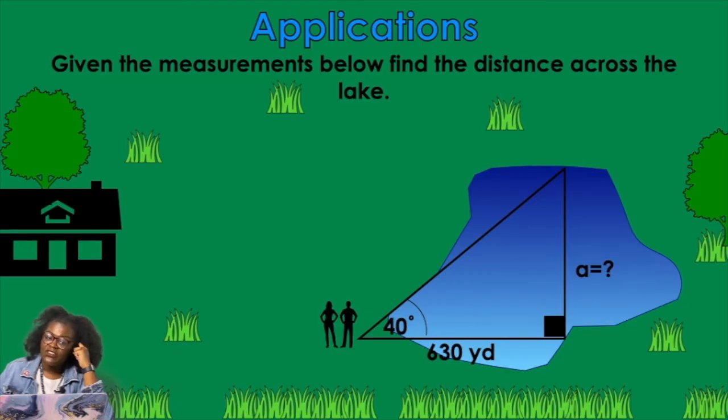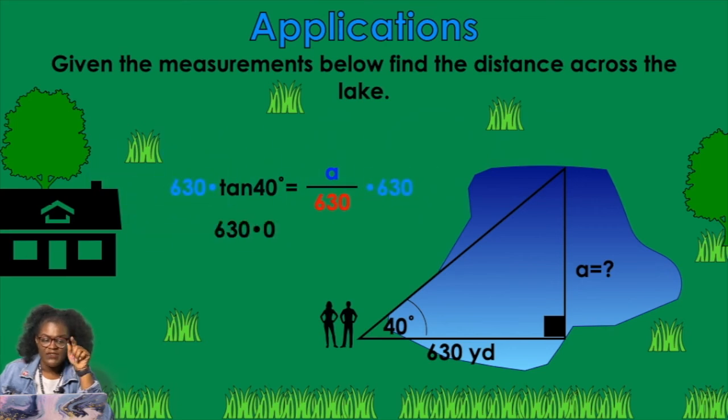Given the measurements below, find the distance across the lake. So let's say you're standing 630 feet. From that point, where the right angle is and the triangle goes all the way up to the other edge of the lake, we want to find the distance across the lake. So I have a 40 degree angle, and then I have a, which is the opposite side, and 630, which is the adjacent side. So opposite and adjacent is a tangent. So tangent of 40 degrees equals a over 630. This is too easy. This is just like example number one or something like that. So multiply by 630 on both sides. Find the tangent of 40, which is 0.831. Multiply those two together. I'm going to get 529 yards.